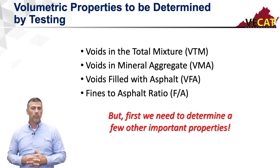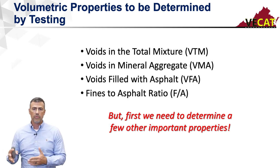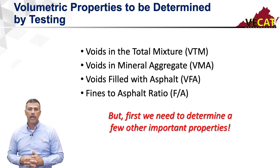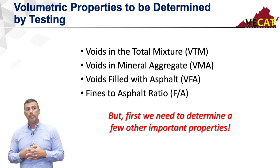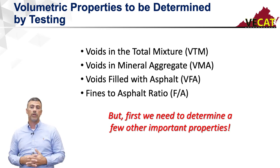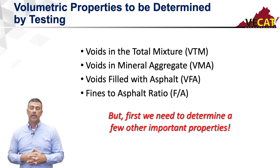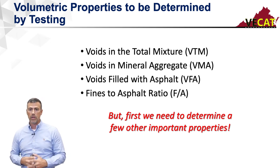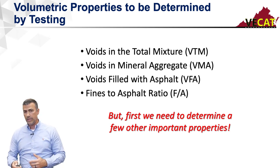And then the fourth one, fines to asphalt ratio — some states refer to it as dust to asphalt ratio, FA. This is the ratio of the percentage of dust or fines passing the number 200 screen divided by the asphalt content, and more particularly the effective asphalt content. We'll come back to that and talk about the calculations for each of these.